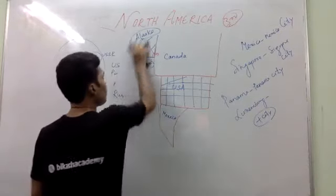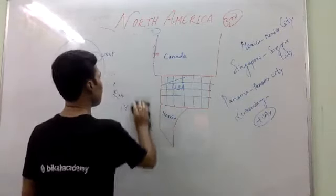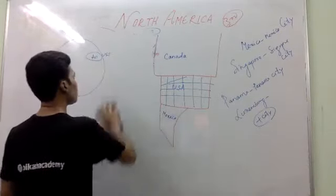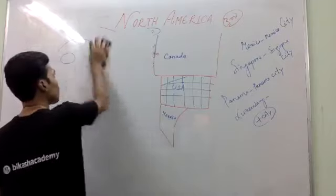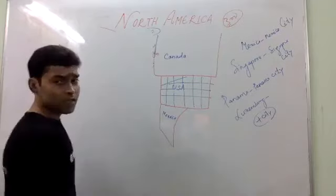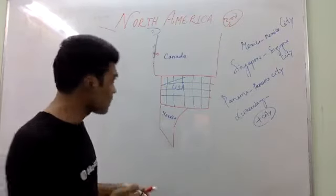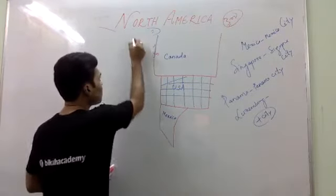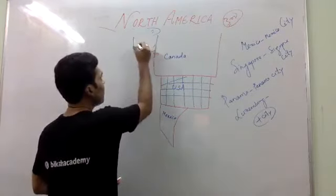So the first thing you have to remember is that Alaska was purchased by USA from Russia in 1867. This is Alaska.